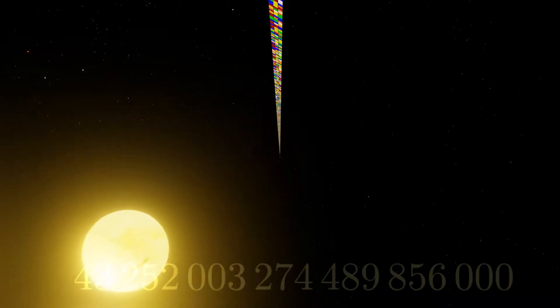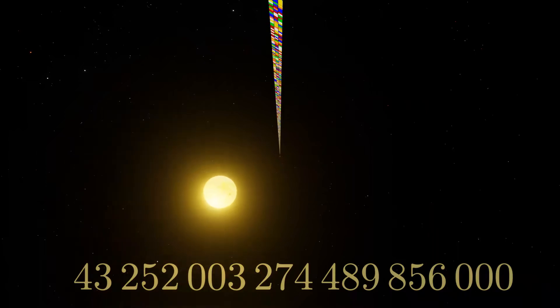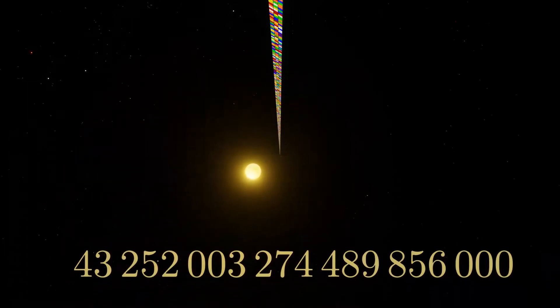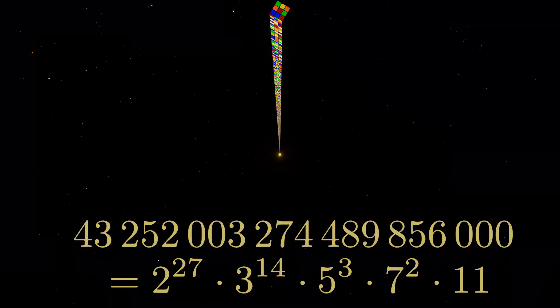But here's the real question. How do we even calculate a number this huge? First of all, this number is a highly composite number. This means it is built from the product of many smaller numbers. Each of these smaller numbers comes from the different choices we can make for the tiny cubies that make up the magic cube.